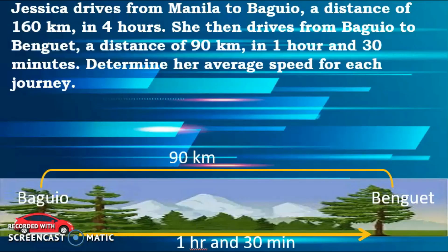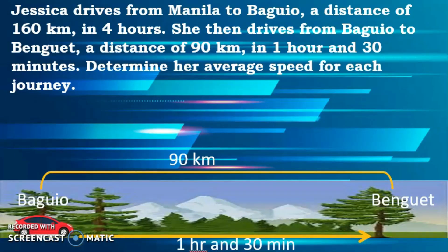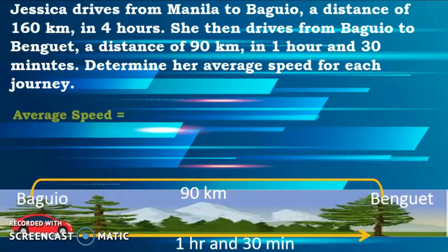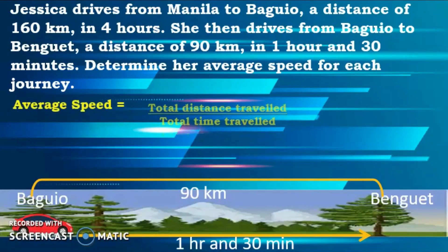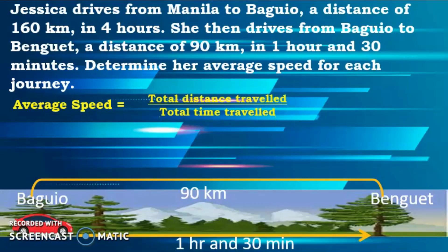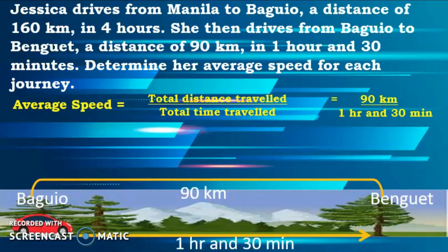Determine her average speed for each journey. Now let us solve for the average speed of her travel from Baguio to Benguet. So we have total distance traveled divided by total time traveled. Total distance traveled is 90 kilometers and total time traveled is 1 hour and 30 minutes. We're going to convert 1 hour and 30 minutes into decimal — 30 minutes is equivalent to 0.5. So that becomes 90 kilometers divided by 1.5 hours. 90 divided by 1.5 — the average speed is 60 kilometers per hour.